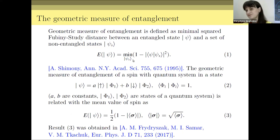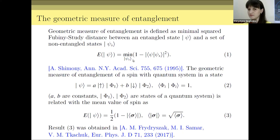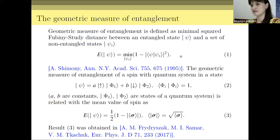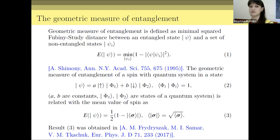I believe that one of the most clear definitions is for the geometric measurement of entanglement, which is defined as the minimal squared Fubini-Study distance between the entangled state we would like to consider and the set of non-entangled states. This is given by equation one — the geometric measurement of a quantum state.